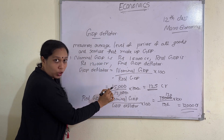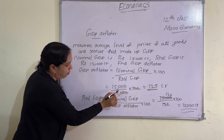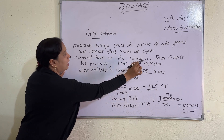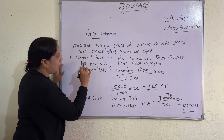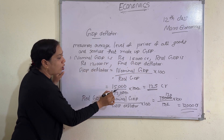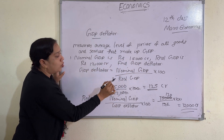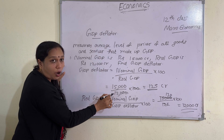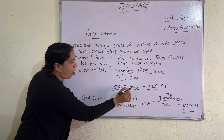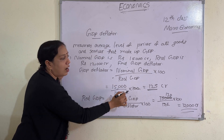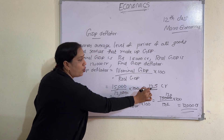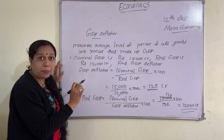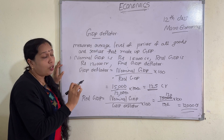Nominal GDP is 15,000 crore, so 15,000 divided by real GDP, which is 12,000, multiplied by 100. The answer is 125. That is the GDP deflator.